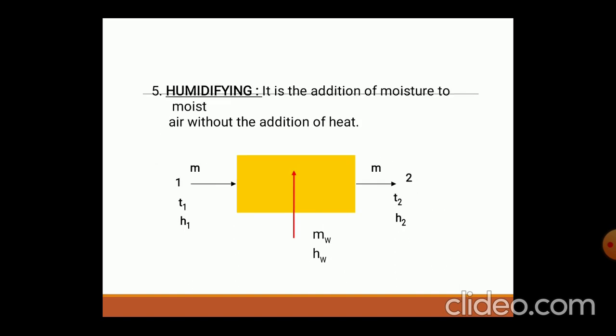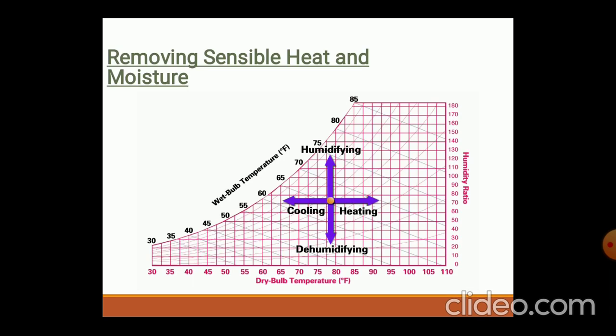Humidification means the addition of moisture to the moist air without the addition of heat. Humidification is required where only addition of moisture to the moist air — without addition of heat — is needed. It is represented on the psychrometric chart, where we can see cooling, heating, humidification, and dehumidification. By adding humidity, the graph moves vertically upward; for cooling purposes, it will move to the right side.